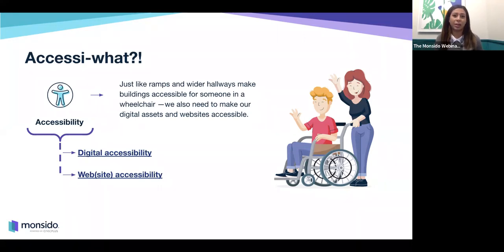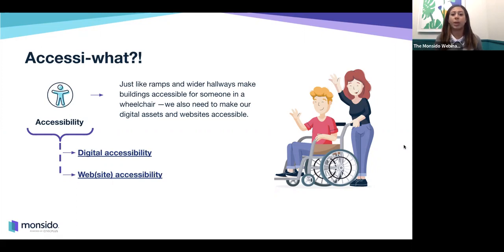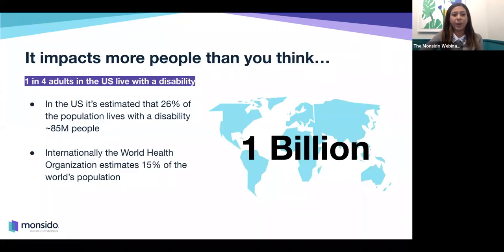Website accessibility, on the contrary, is making sure that your website is inclusive and able to be accessed by people with permanent or temporary disabilities — for example, vision loss, a broken arm, and other impairments that would hinder someone being able to access your website.